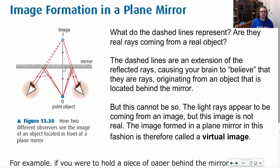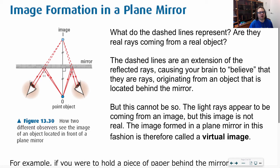Looking at the image formation of a plane mirror: here we have these dashed lines. My object is here, and when I'm looking from here, I see my object way over there. The dashed lines are just extensions of the reflected rays, causing our brain to believe that they are originating from way over here. My object is shooting off light, it's hitting my mirror and then coming back to my eyes. The angle of incidence must equal my angle of reflection, and if we continue this angle of reflection, that's where we end up seeing my image based on these two lines.